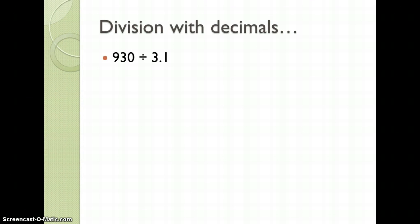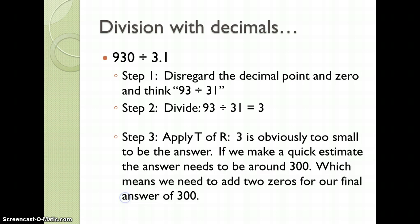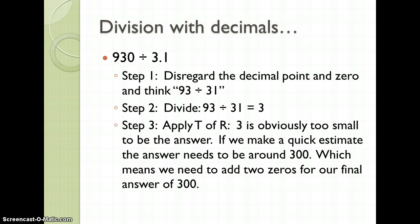Let's try 930 divided by 3.1. We're going to disregard the decimal point and the 0 and think 93 divided by 31. We're actually going to divide 93 by 31 to give us 3. 3 is obviously too small to be the answer. If we make a quick estimate, the answer needs to be around 300, which means we need to add two 0s for our final answer of 300.